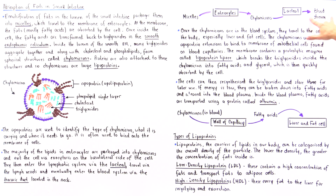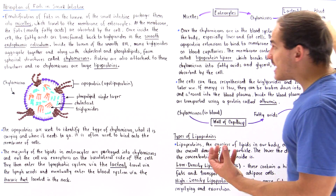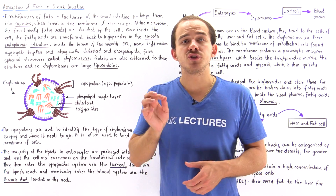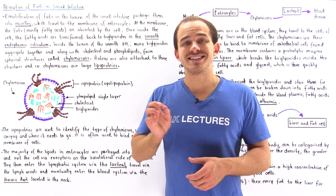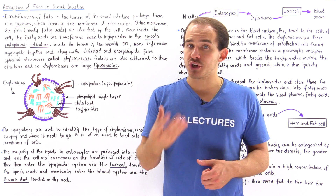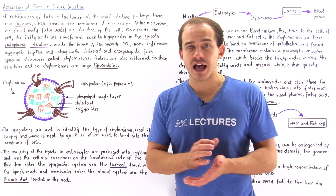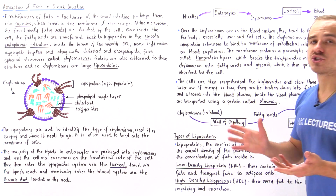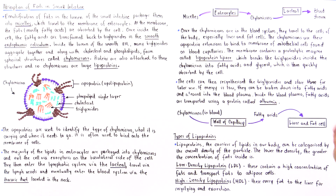Once inside the bloodstream, inside the blood plasma, these chylomicrons travel to their target cells, which are usually liver cells and fat cells also known as adipocytes.